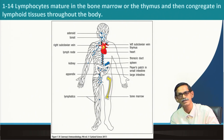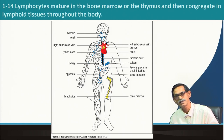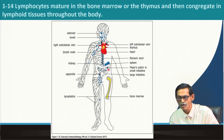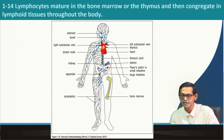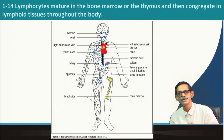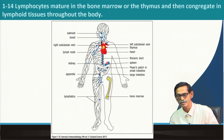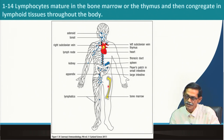After maturation of B cells and T cells, they migrate to secondary lymphoid organs like lymph nodes. All the blue small dots are lymph nodes present all over the body. They will go to lymph nodes and also to the spleen, which is another secondary lymphoid organ. There are also mucus-associated lymphoid organs — we will discuss these as well.